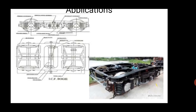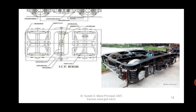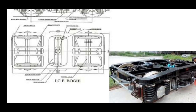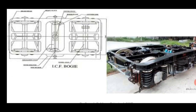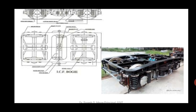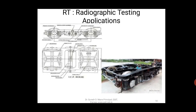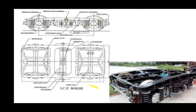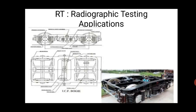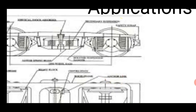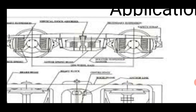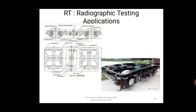Coming back to railways — this sketch shows the ICF bogey; each coach has two bogeys. The bogey has two plates — top and bottom — with many butt joints where different sections are welded together. Each butt joint is given a specific number and tested by radiographic testing. This is why you don't find failures of railway coaches — because they are properly tested. ICF stands for Integral Coach Factory.